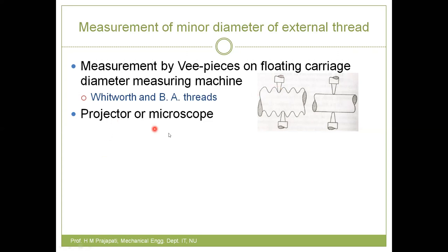A second method for minor diameter measurement is to use a projector or microscope. You place the thread on the microscope table, take an image, and then do the measurement. Again, we follow the same procedure using a setting cylinder whose diameter is close to the minor diameter of the external thread. First we measure that cylinder to get R1, then replace it with the actual screw to get R2, and use the equation D + R2 − R1.